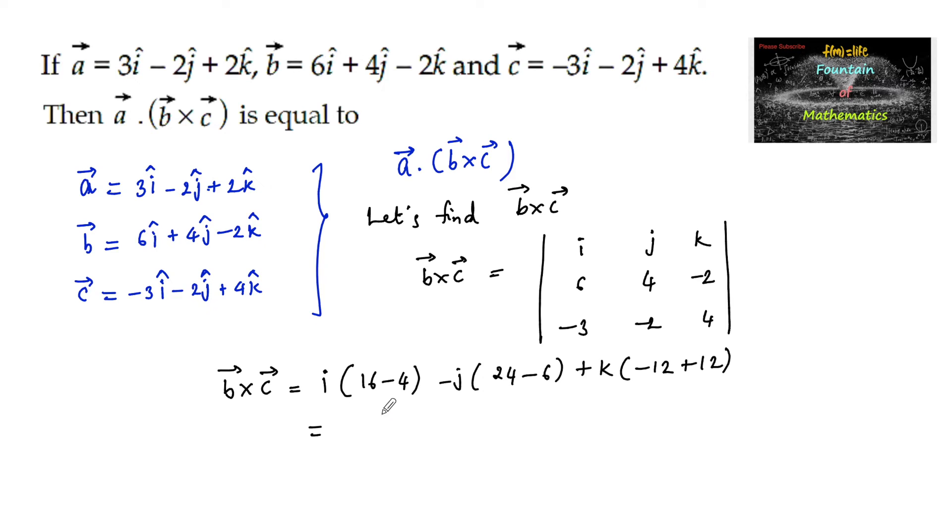Which equals 12i minus 18j plus 0k. So we're getting 12i minus 18j, and now let's find a dot of b cross c.